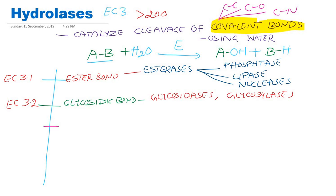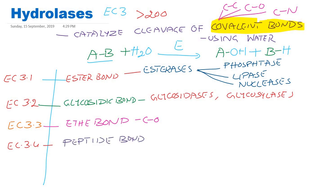These Hydrolases can break ether bond like C-O, so they are enzyme class 3, subclass 3. Most important Hydrolases are EC3-4, so they can attack on peptide bonds, that is CONH, and they are commonly known as proteases or peptidases.